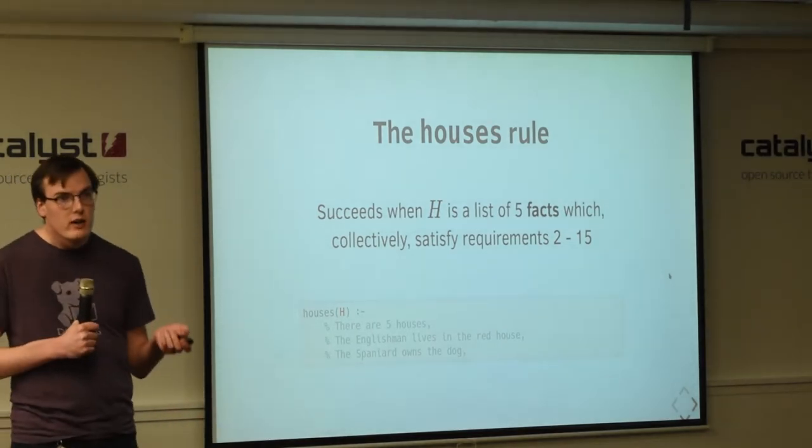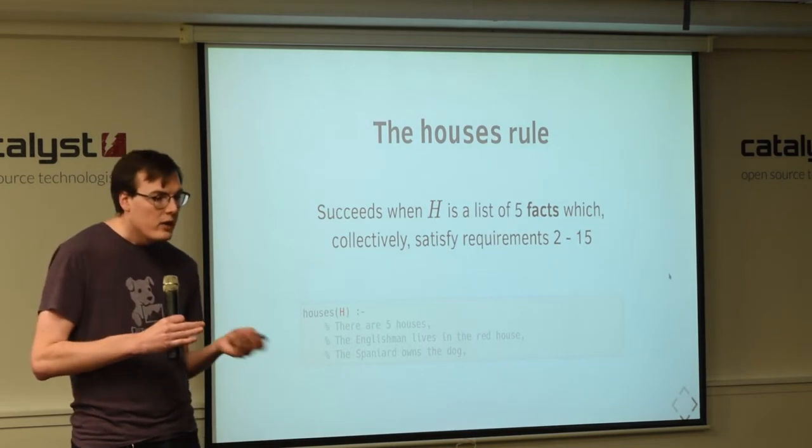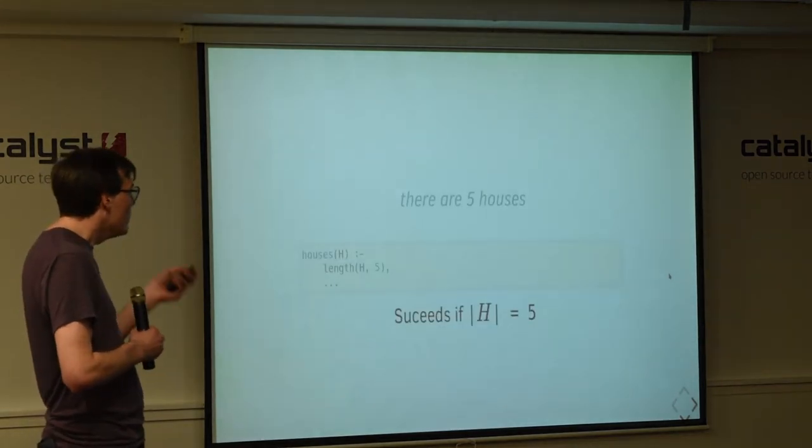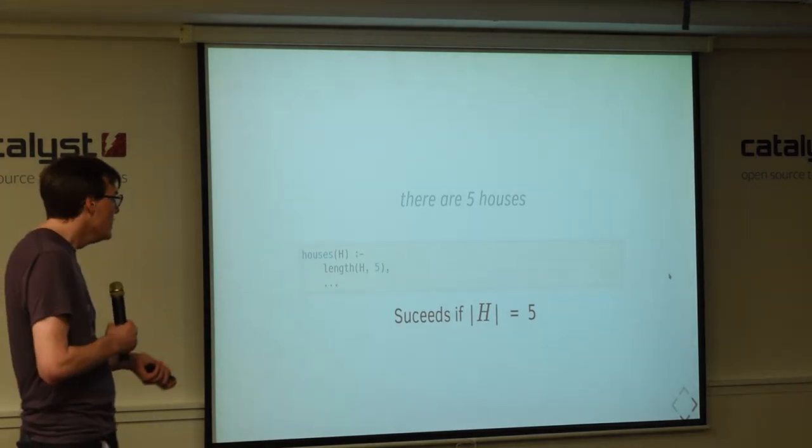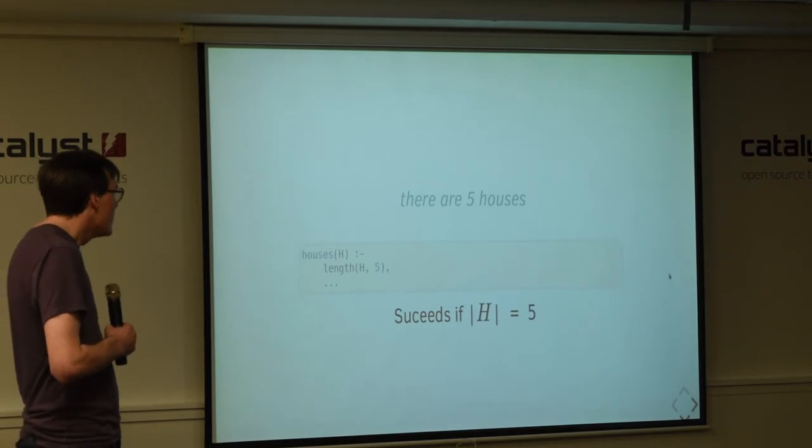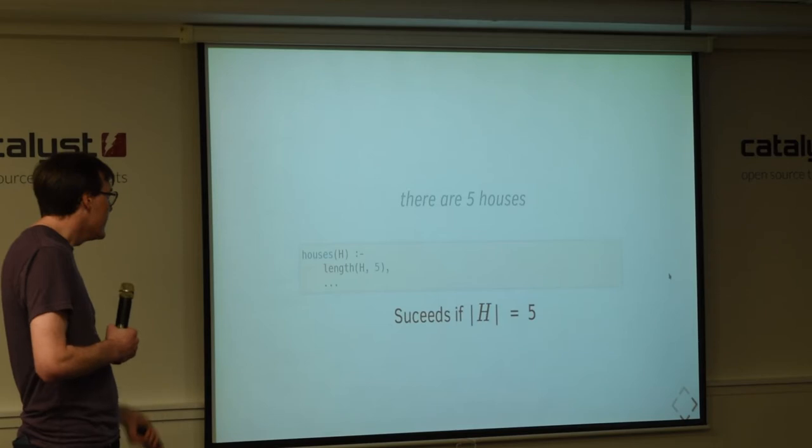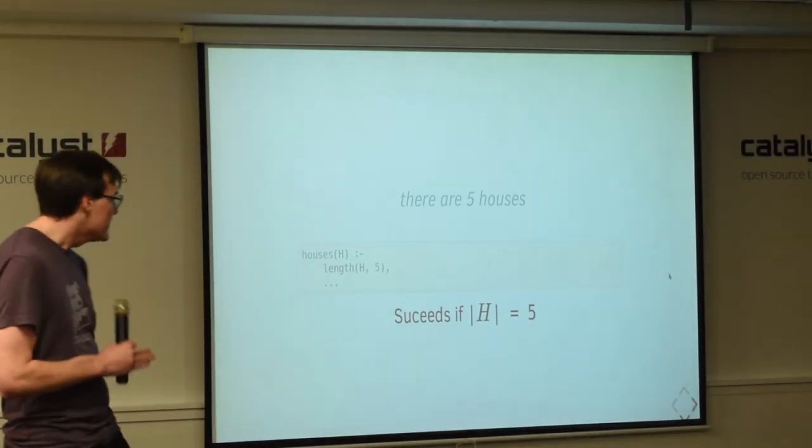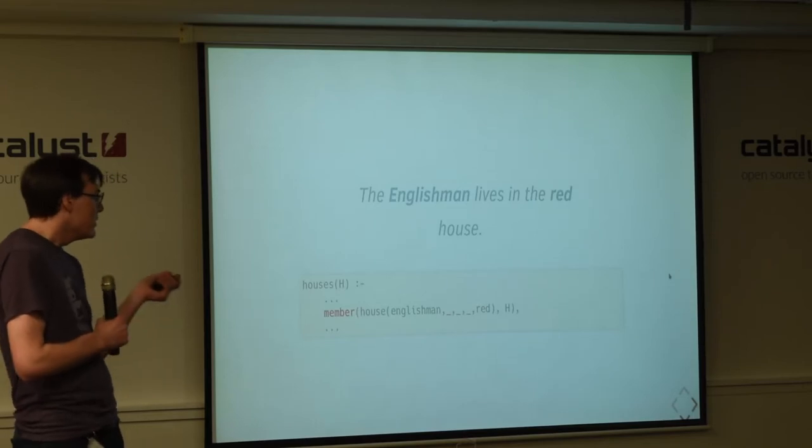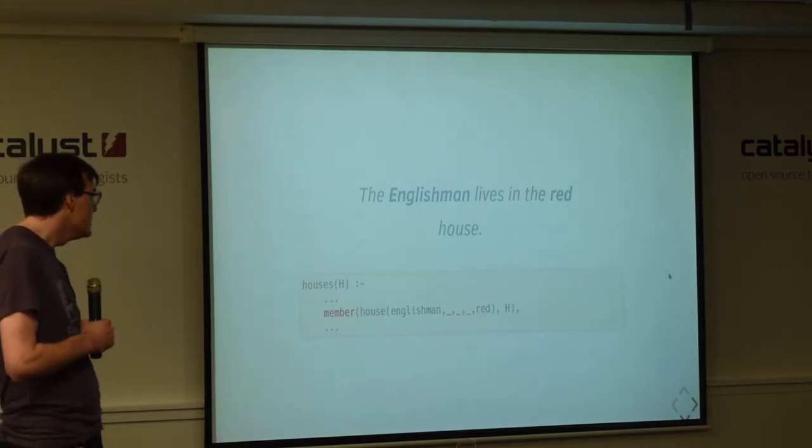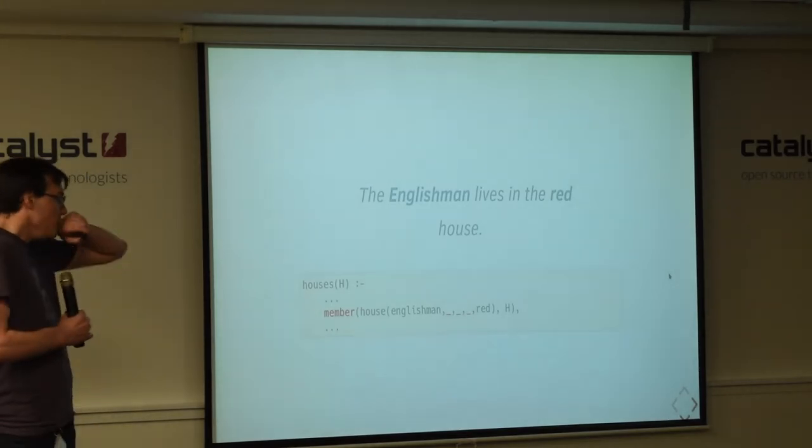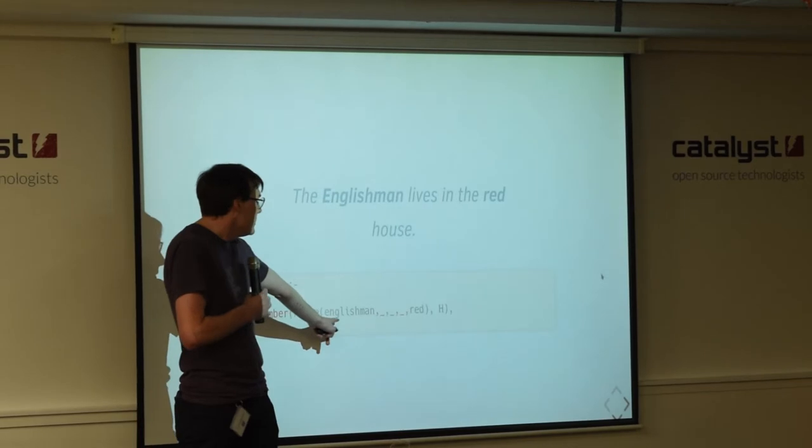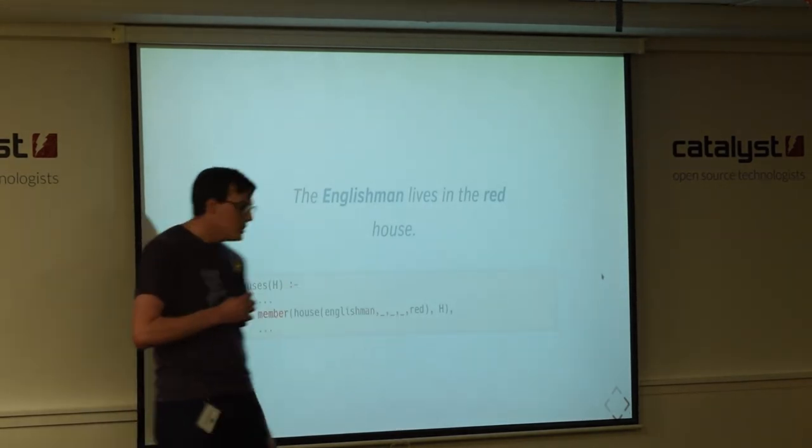But we need to be able to load in all of the constraints. So, the first constraint, there are five houses. We have a function length, which finds the value for H that H is five facts long. And now, we can start on the more interesting ones. So, the Englishman lives in the red house. So, we have our fact, the house. We know the Englishman lives in the house. The house is red. And we don't know about the rest. So, we'll just say we don't care.